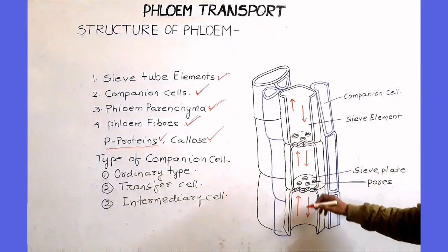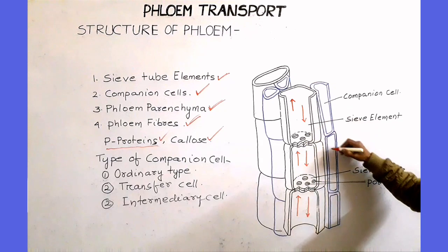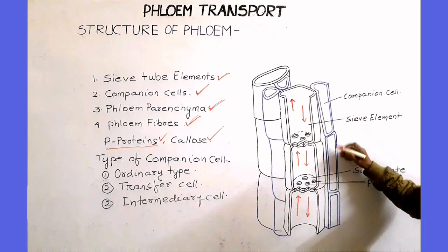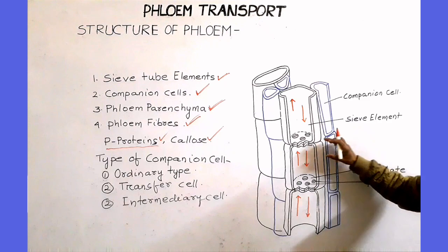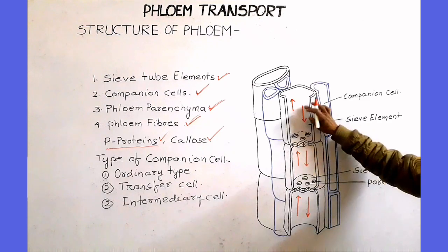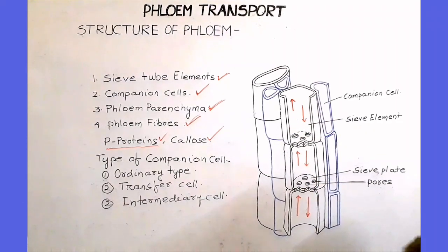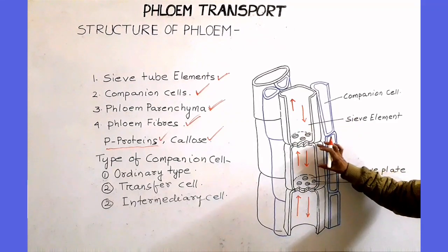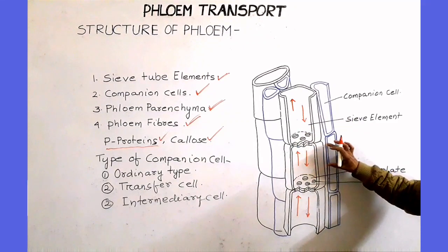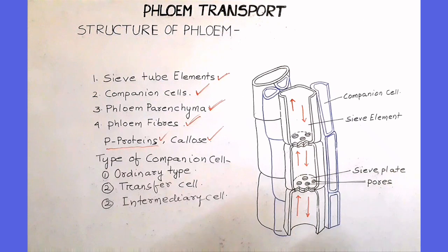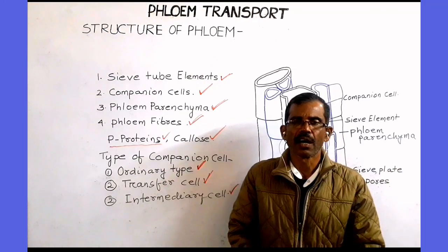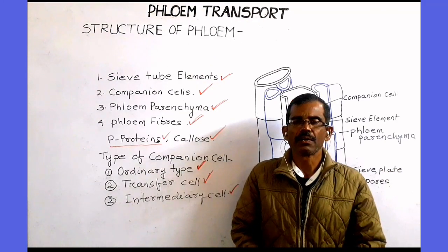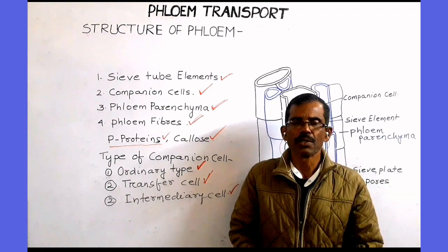Closely associated with the sieve tube elements are the companion cells. These companion cells are simplastically connected with the sieve tube elements. Companion cells are living cells, and they regulate the activity of sieve tube elements.